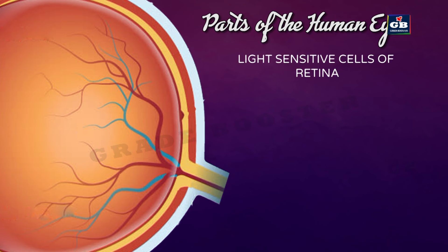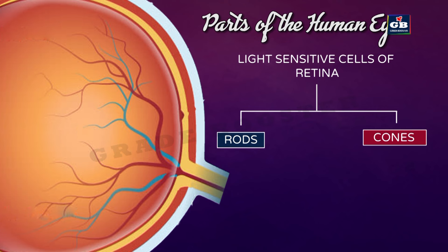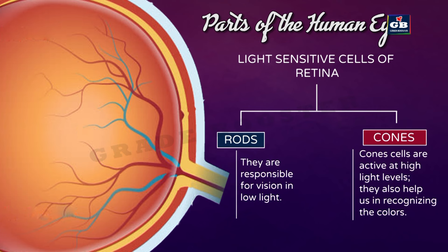The light-sensitive cells of the retina are of two types: rod cells and cone cells. Rod cells are responsible for vision in low light — they are helpful for nighttime vision. Cone cells are active at high light levels and help us in recognizing colors, so our daytime vision is mostly based on cone cells.